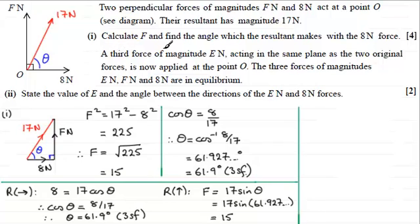In part two, we've got a third force of magnitude E newtons acting in the same plane as the two original forces, now applied at point O. The three forces of magnitude E newtons, F newtons, and 8 newtons are in equilibrium. We need to state the value of E and the angle between the directions of E newtons and the 8 newton forces. If you'd like to have a go, give you a moment to pause and then I'll run through the solution.